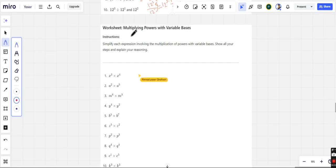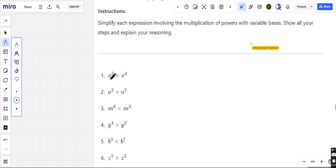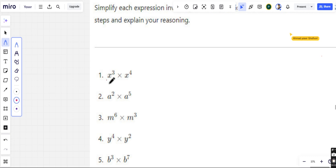So, multiplying powers with variable bases—we have the same rules, everything is the same just like we did in the previous worksheet. The only difference is this is a variable.